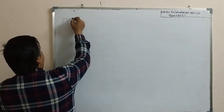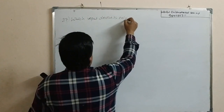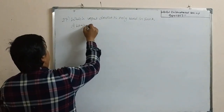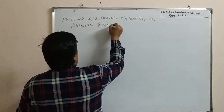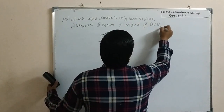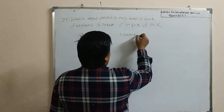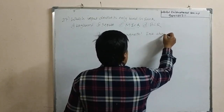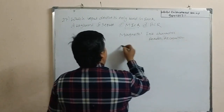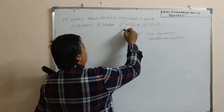Question number 27: which input device is only used in a bank? Option A, keyboard; Option B, mouse; Option C, MICR; Option D, BCR. MICR stands for Magnetic Ink Character Reader or Recognition. This is the input device that is only used in banks, so option C is the correct answer for this question.